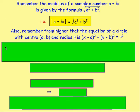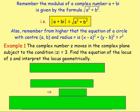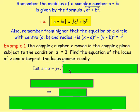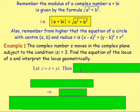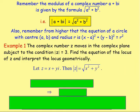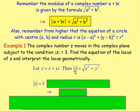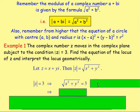Example one: the complex number z moves in the complex plane subject to the condition the modulus of z is 3. Find the equation of the locus of z and interpret the locus geometrically. We're going to let z equal x + yi. We know the modulus of x + yi is the square root of x² + y². We're told the modulus is 3, so the square root of x² + y² must equal 3.